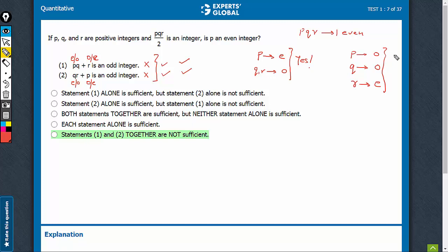However, for this set, the answer we are getting is no, P is not even. So yes is also possible, no is also possible on combining. So that means even combining is not working and therefore E is the correct answer choice.